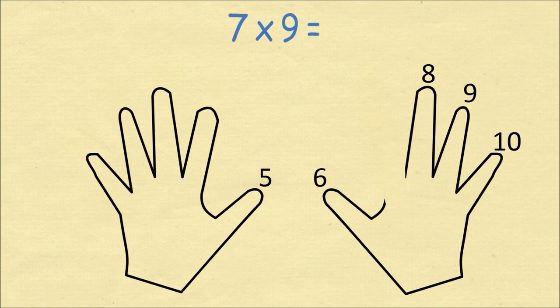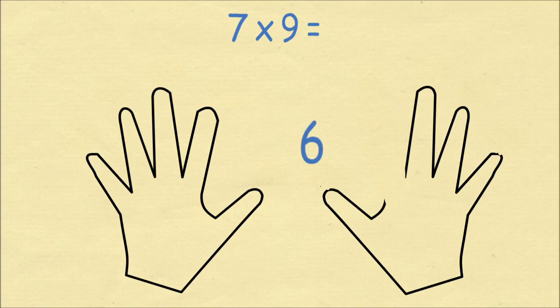To do the calculation we count the number of fingers to the left of the bent finger and to the right. There are six fingers to the left of the bent finger, and there are three fingers to the right. Seven times nine is therefore 63.